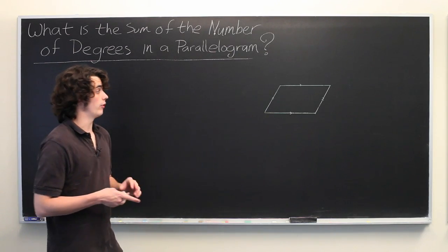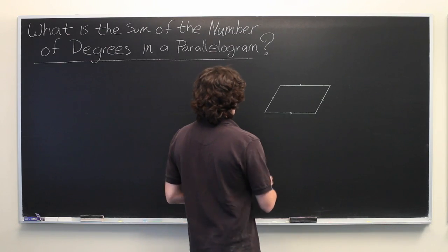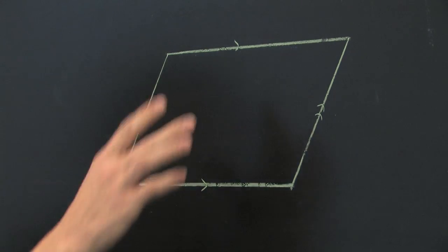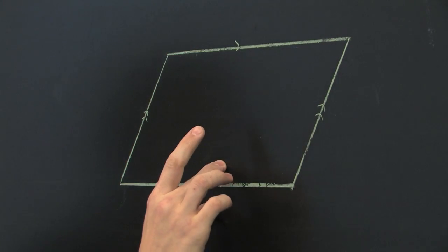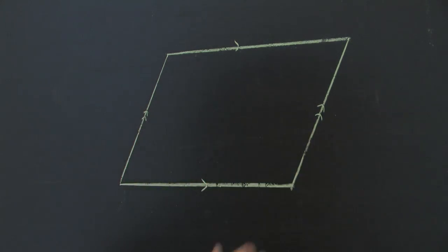Rather than just state the answer, we're going to prove it. So here we have a parallelogram. We know that this line segment and this line segment are parallel, and these two are parallel as well.